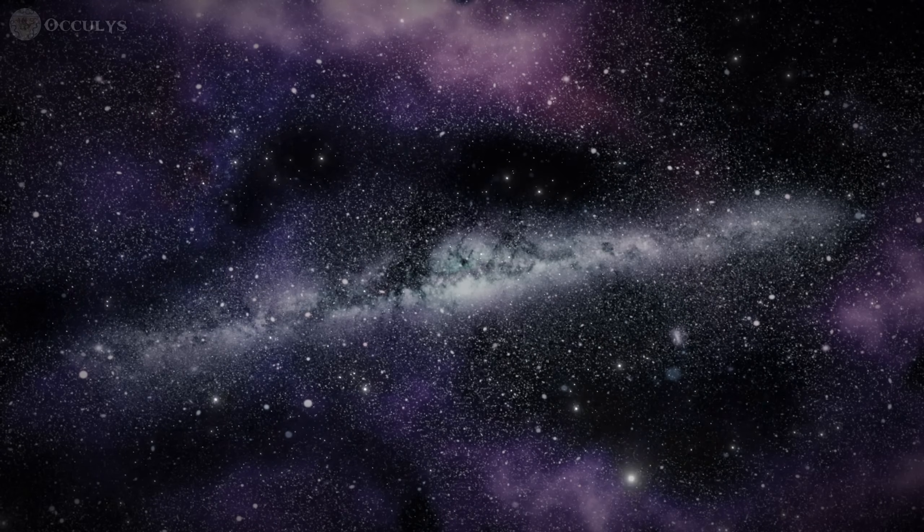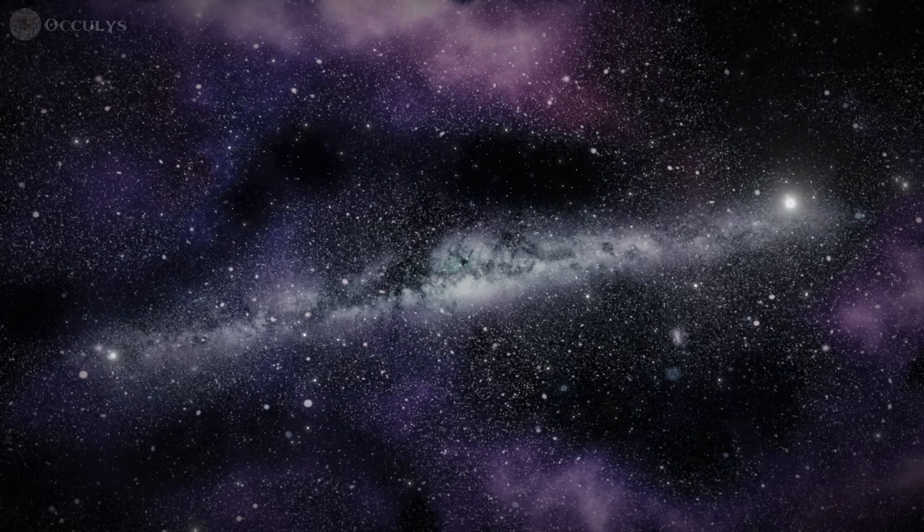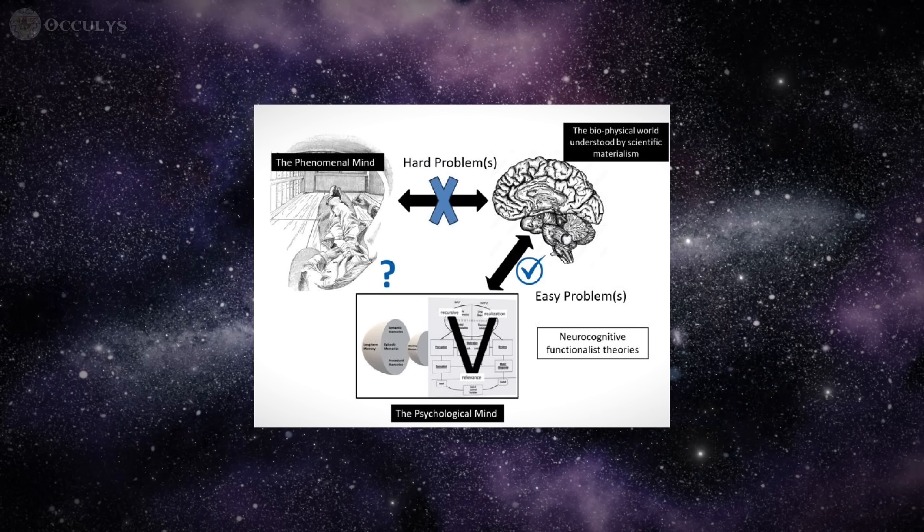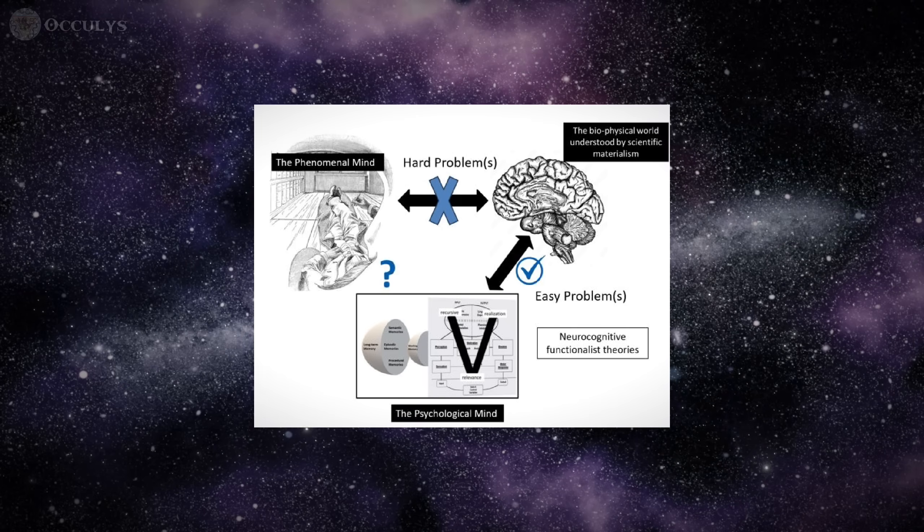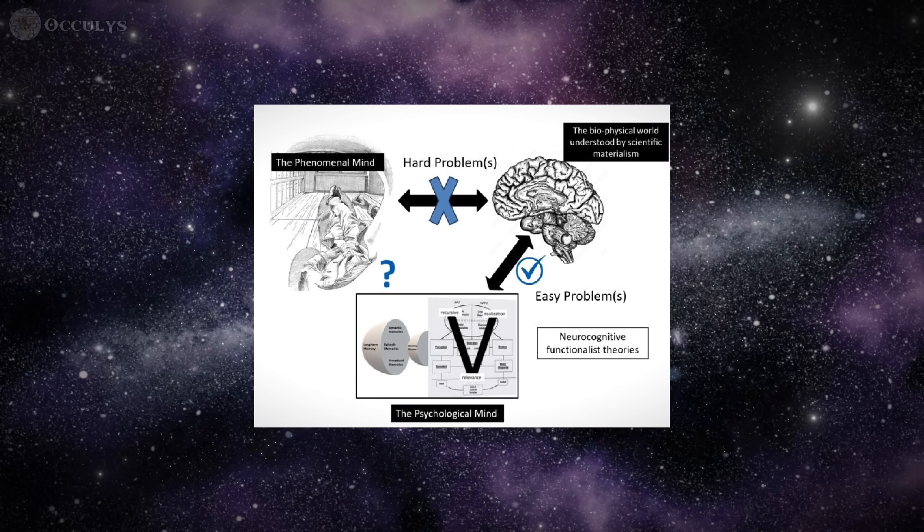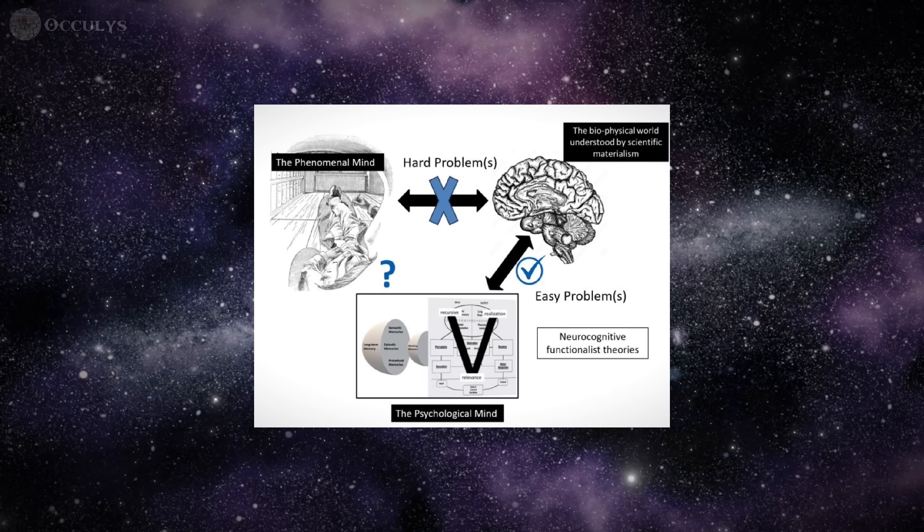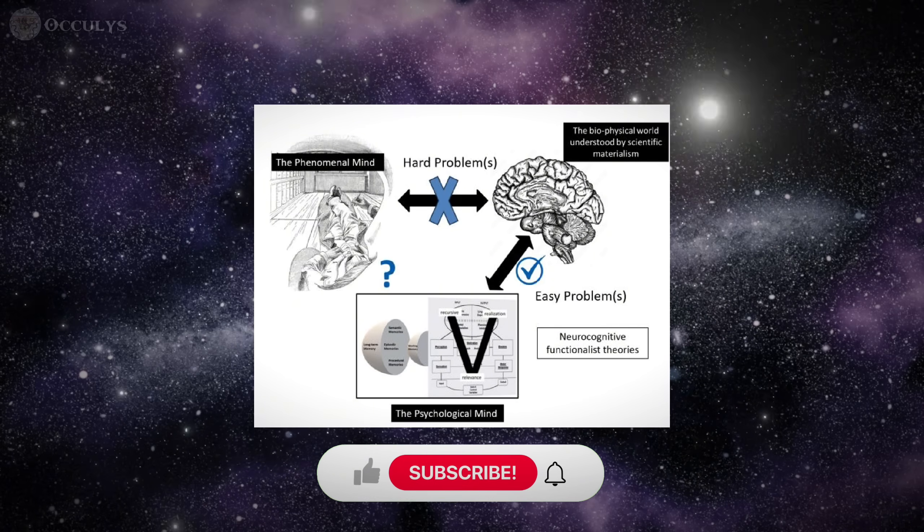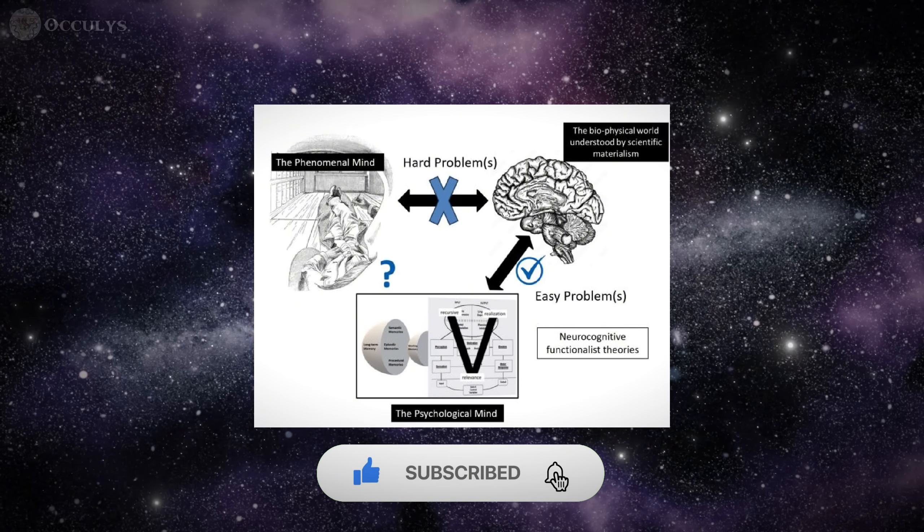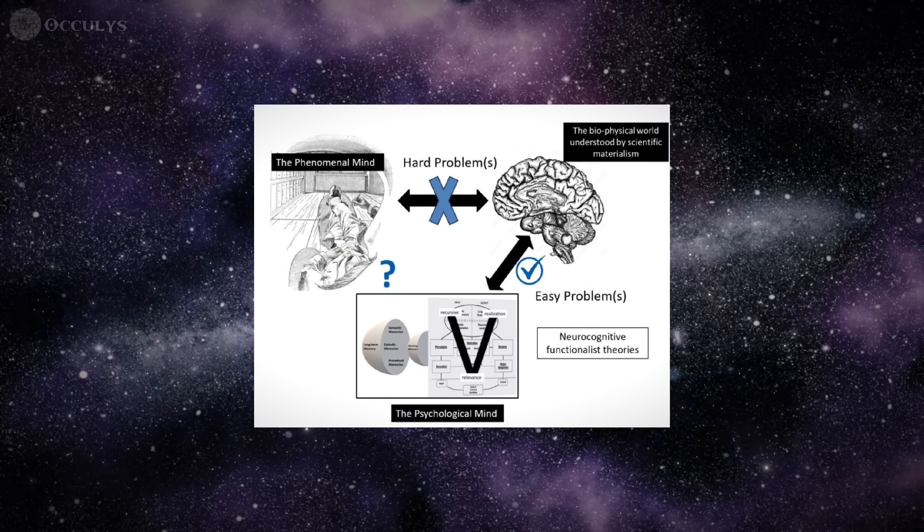Panpsychism is not without significant critics and faces major intellectual hurdles. The most serious challenge is known as the combination problem. The basic premise of this challenge is if fundamental particles possess a rudimentary form of experience, then how could these countless micro-experiences combine to create the single, rich, and unified consciousness of a human being? They contend that because no coherent mechanism for this binding has been proposed, the theory is left with a deep conceptual gap.